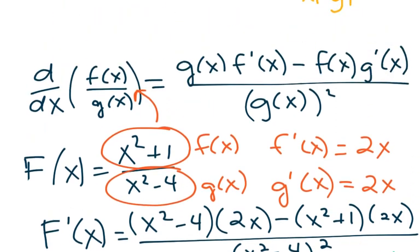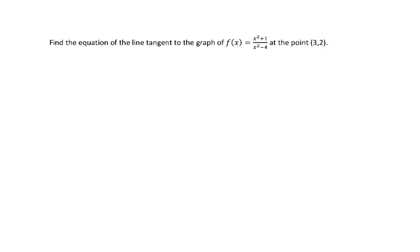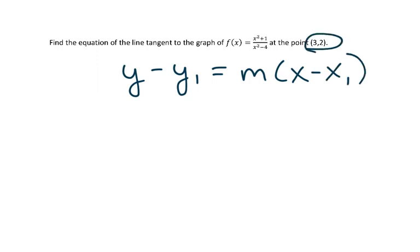So now we know our slope is negative 6 fifths. We also know that our point is 3, 2. So we have slope, we have a point, and so what I'm going to do is use point slope form of a line. I have y minus y1 is equal to m times x minus x1. From this point here, we know that x1 is 3, y1 is 2, and from the work we just did, we know that the slope is negative 6 fifths.